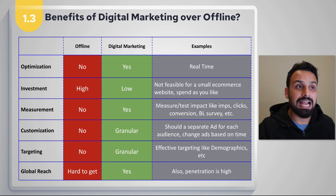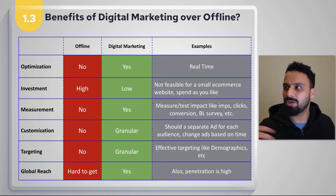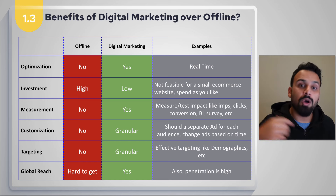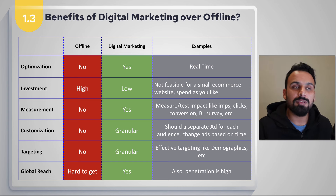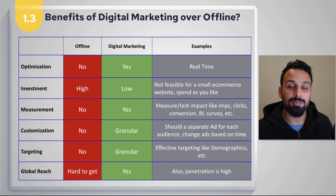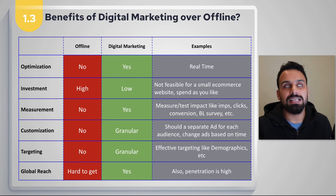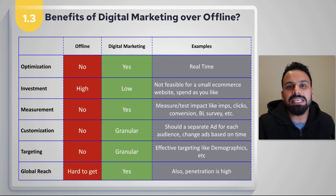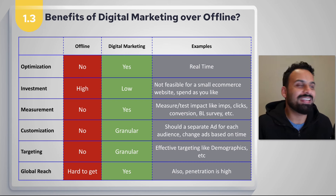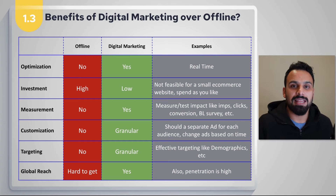If you run operations in multiple countries, managing all offline suppliers — newspaper, out-of-home, TV — is very difficult. With digital marketing, you can run campaigns from one location targeting anywhere globally. Penetration is also high — teenagers today don't watch TV, listen to radio, or read newspapers. The only way to reach them is on YouTube, Facebook, Spotify, and similar platforms.